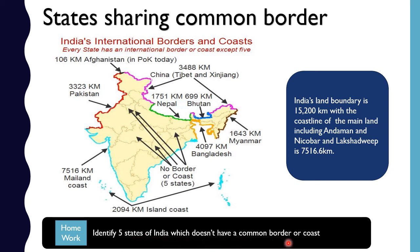The lengths of shared borders are: Pakistan 3,323 kilometers, Afghanistan 106 kilometers, China 3,488 kilometers, Nepal 1,751 kilometers, Bhutan 699 kilometers, Myanmar 1,643 kilometers, and Bangladesh 4,097 kilometers. The total coastal line is 7,516 kilometers, and from the two island coasts it is 2,094 kilometers.